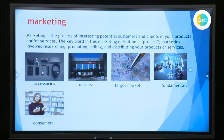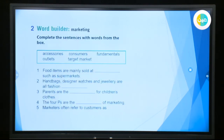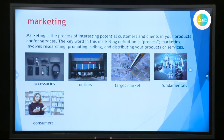Here we have some words which we are going to use later in this exercise. We have about five words, but first we have to know what each word means. Look at the first picture. It shows us some accessories. Accessories is a general word including sunglasses, watch, handbags, and hats. So we call all these things accessories.